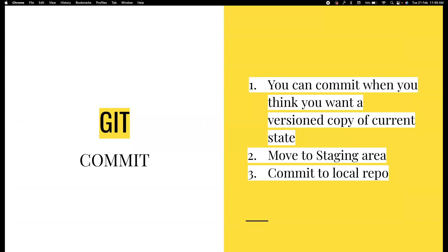When you do a commit, in future, if you want to come back to that state, you can exactly do that. So you may commit when you think your project or your code is in a meaningful state and you also want this to be a versioned copy of your system. Let's say this is version one, version two, version three. And in version 10, if you want to go back to version two, you can — and this is what a commit does.